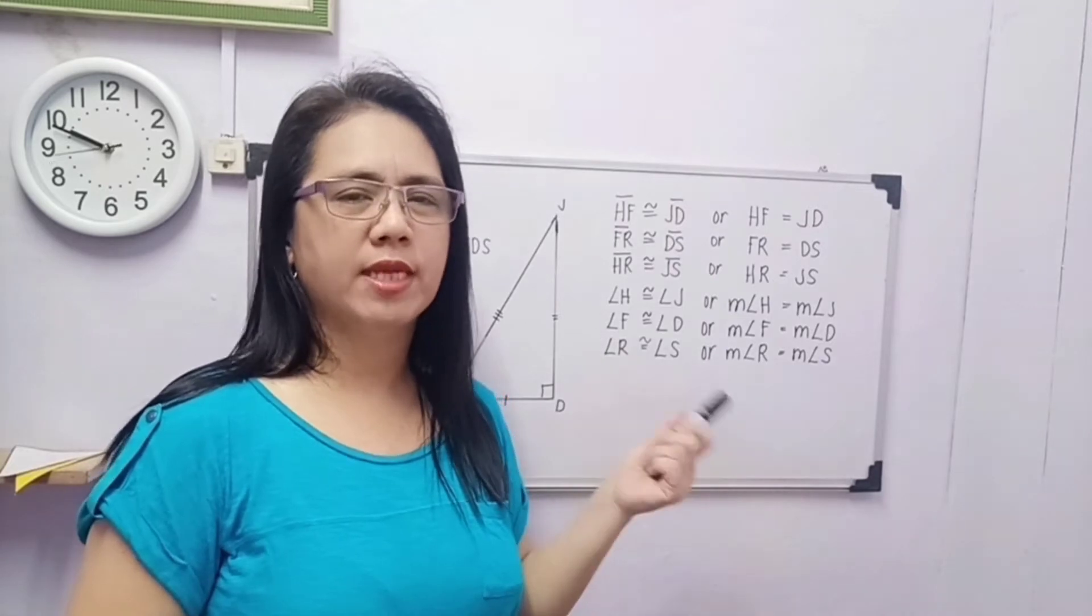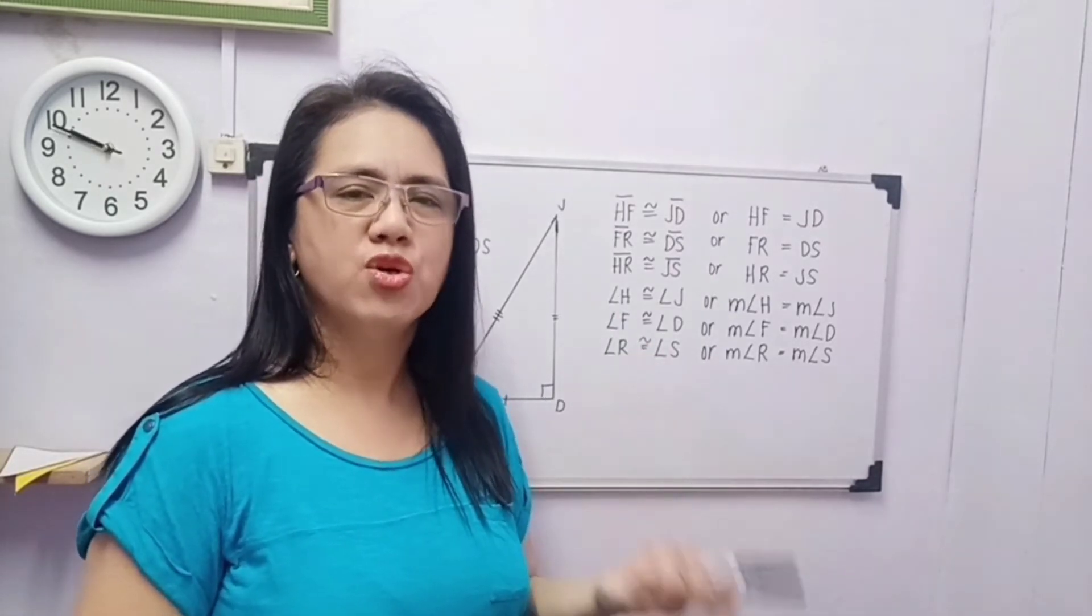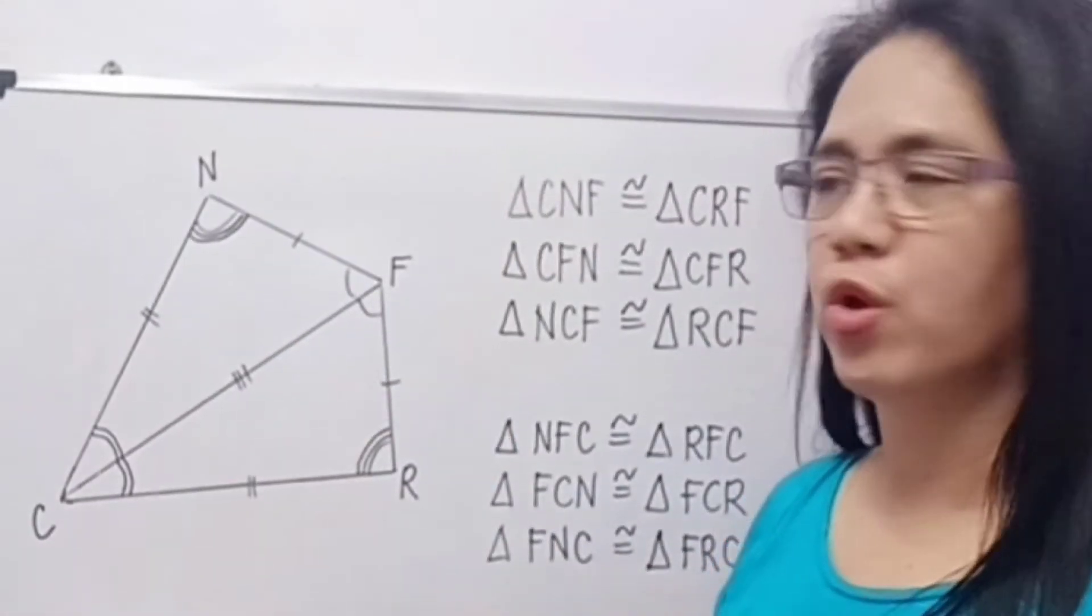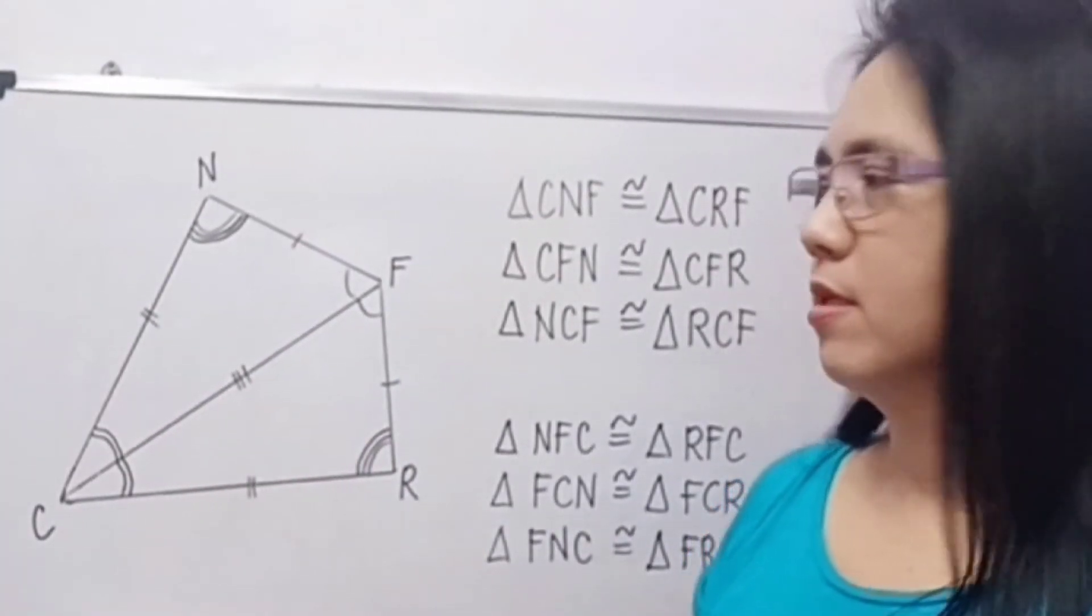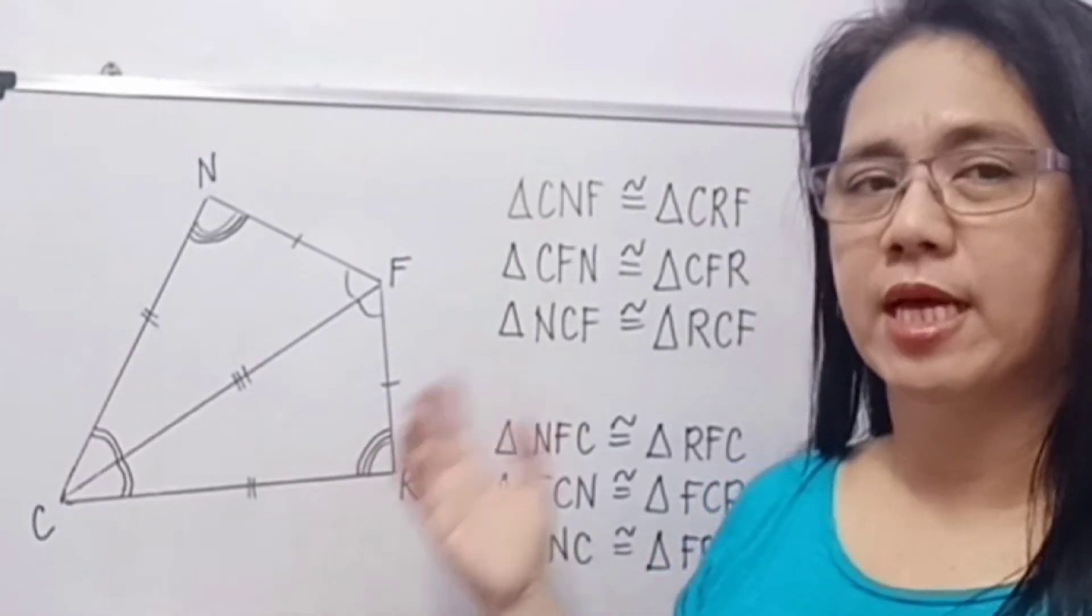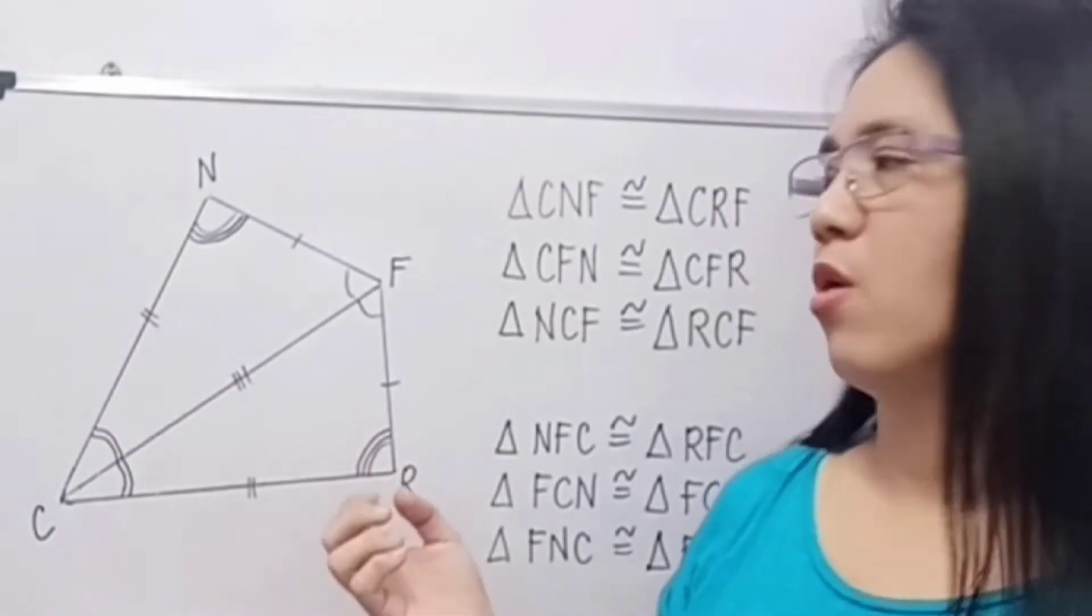Since gagamitin natin ito as reason for proving, we can use the CPCTC. So dito sa given figure na ito, magkadikit yung triangle, dalawang triangles. And may mga markings na din sila, so madaling natin ma-identify na sila ay congruent triangles.